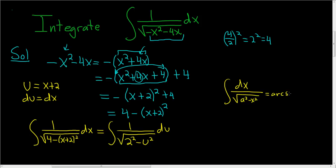So this is the arcsine of x over a plus c. So now we can directly use the formula. This will be the arcsine of u over a. A is 2 in our problem. So u over 2 plus c.